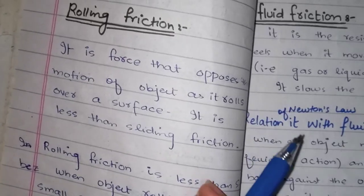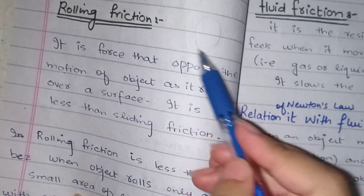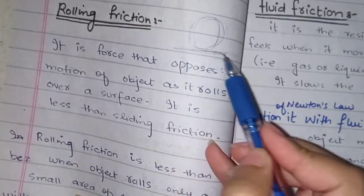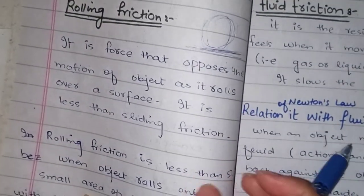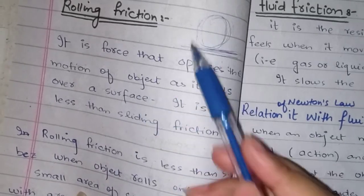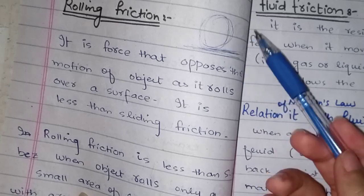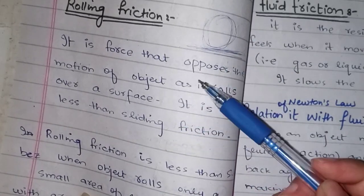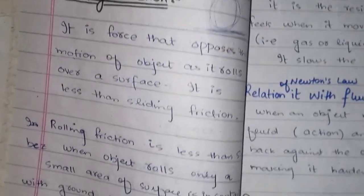Rolling friction occurs when an object rolls on a surface. For example, a tire rolling on a surface experiences rolling friction. When a object rolls, it has a certain motion on the surface, and the force opposing that motion is called rolling friction. Rolling friction is less than sliding friction.